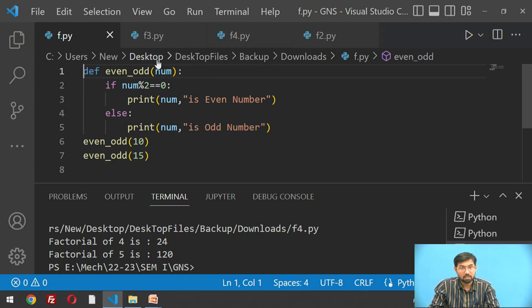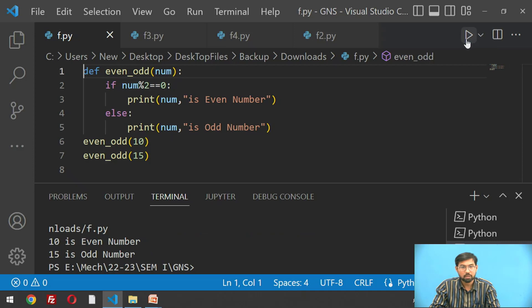That number mod 2, that means remainder of that number will be 0, print num is even number. If remainder is not 0, then it will be odd number. We check with 10 and 15. These are calling the arguments in the defined function, and we get 10 is even number because remainder is 0, and 15 is odd number because remainder is not 0.